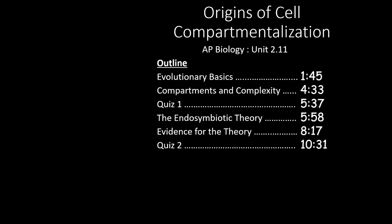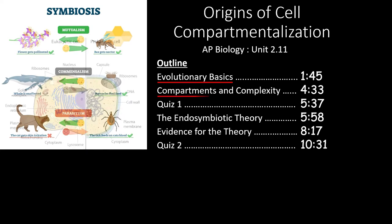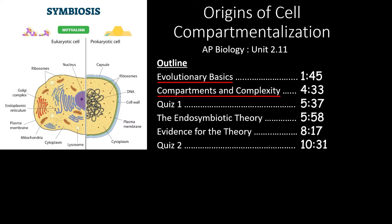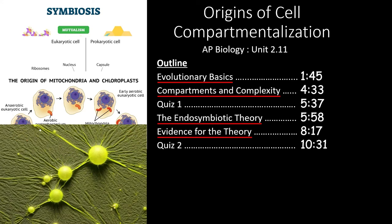In this video, we will be covering the information found in section 2.11 of the AP Biology curriculum that focuses on the origins of cell compartmentalization. We will begin with some basics and vocabulary about evolution. Then, we will quickly review the benefits of compartments and the complexity that they create. After the first quiz, we'll dive into the endosymbiotic theory and see how organelles have evolved from free-living organisms. Finally, we'll review the plethora of evidence that supports the theory. If you only need to review one part of this video, feel free to skip forward to the times outlined here.